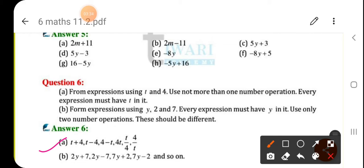Next one. Form the expressions using Y, 2 and 7. Every expression must have Y in it. Use only two numbers for the operations. This should be different. So here you have to use two operations.